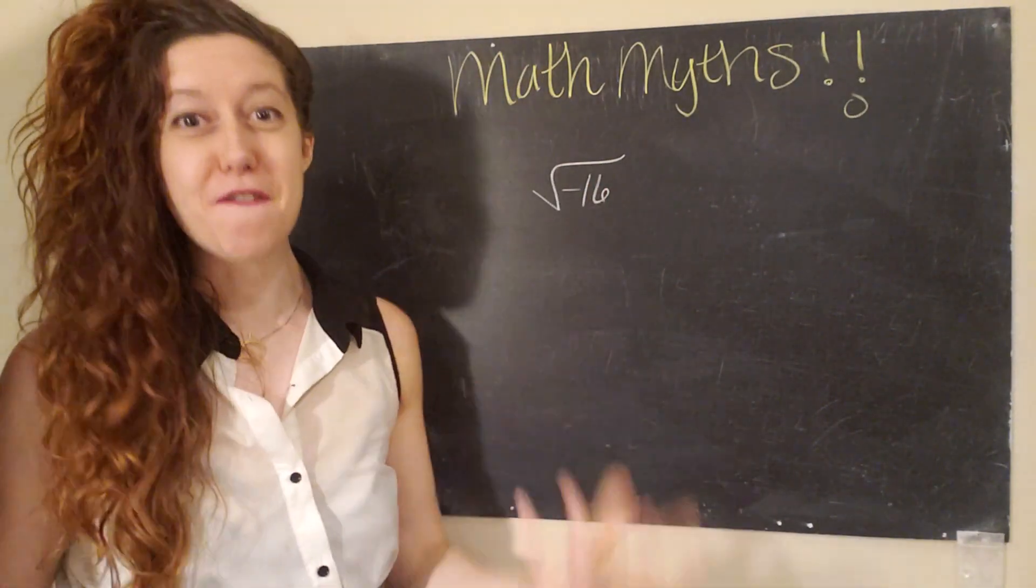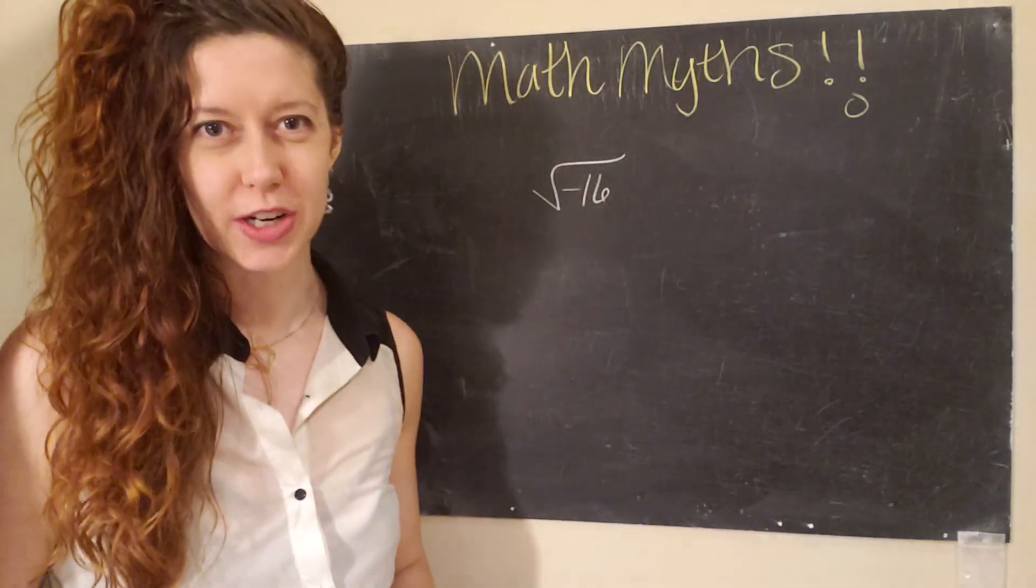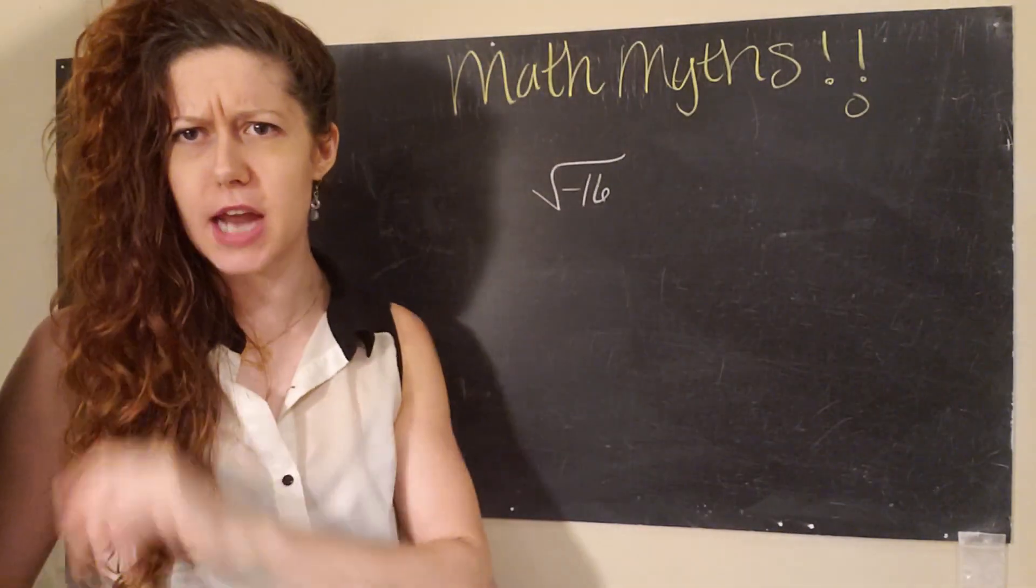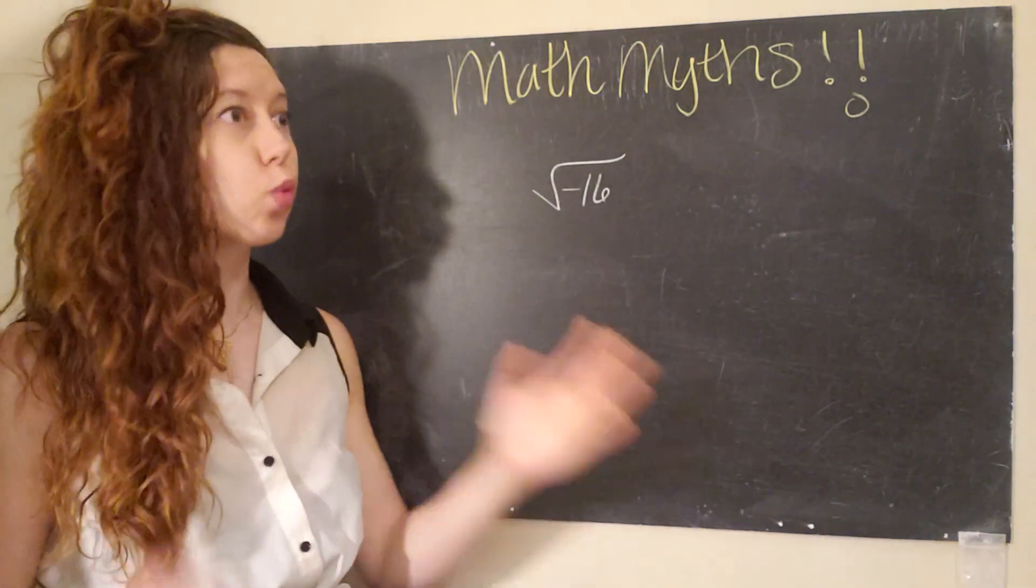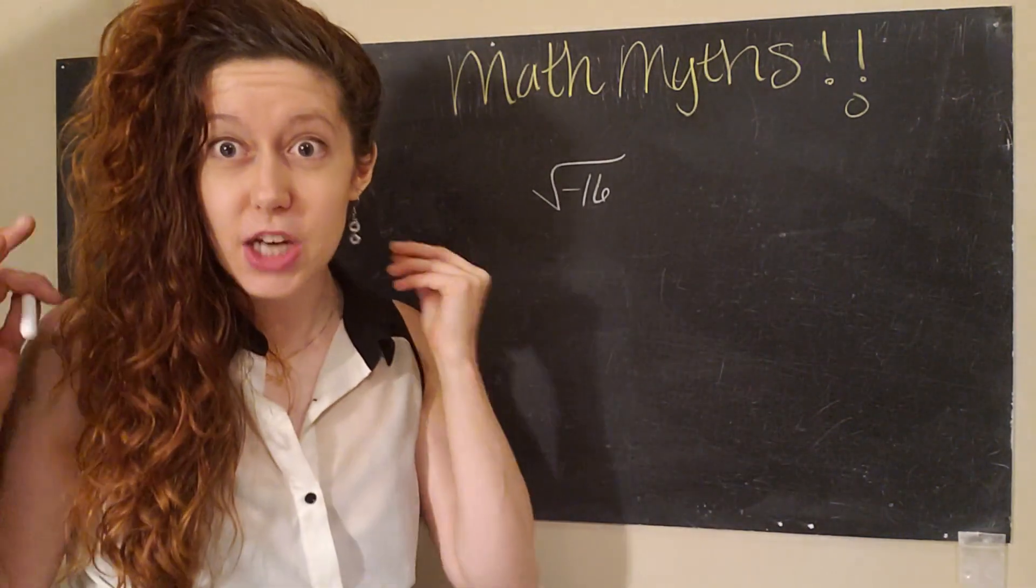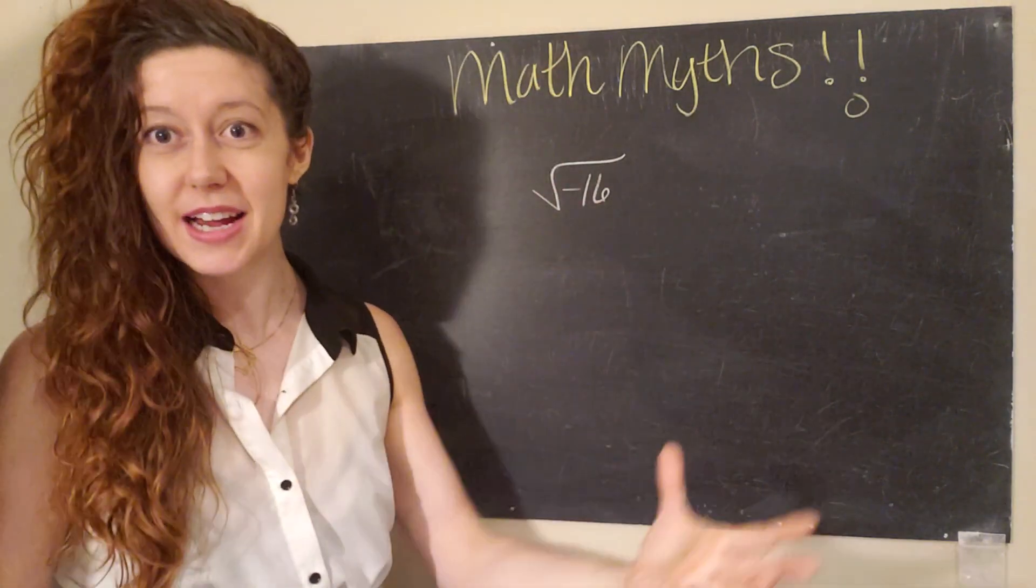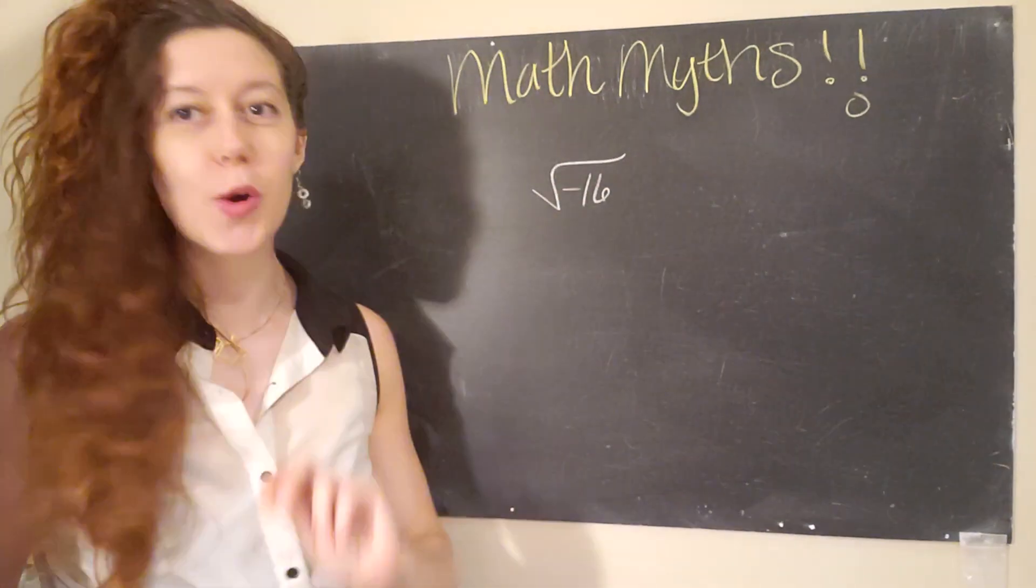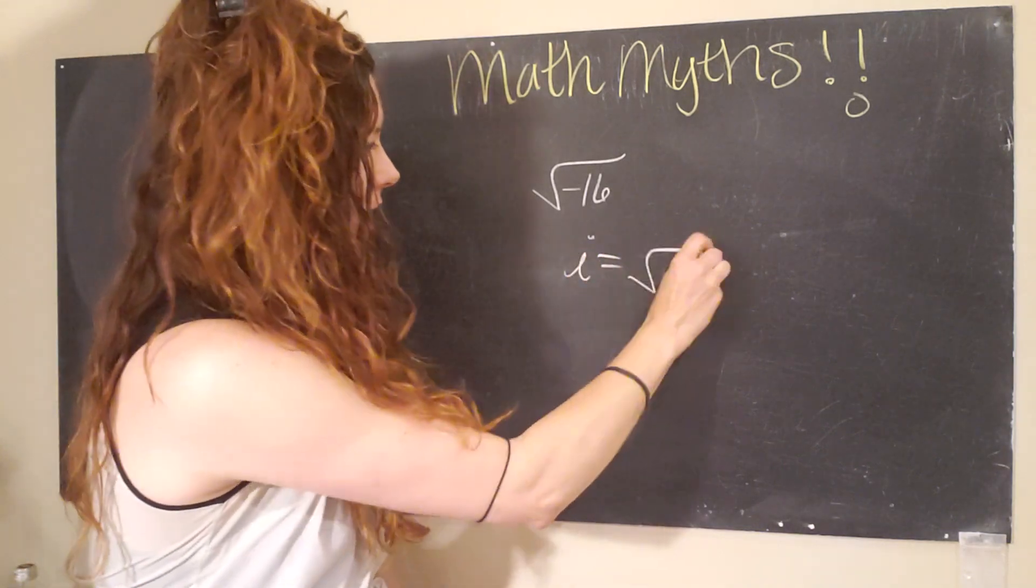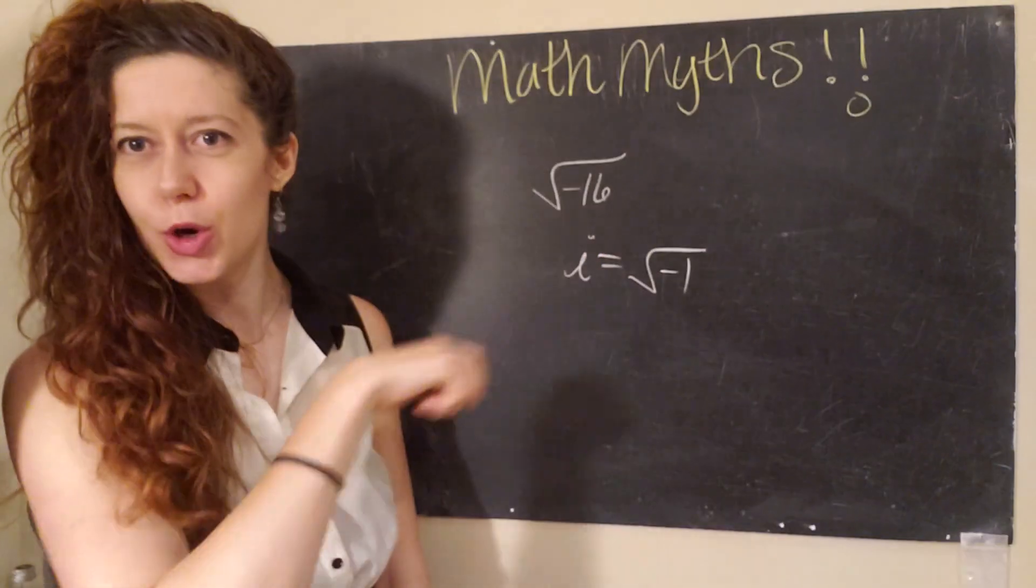Mathematicians as far back as the 1700s were grappling with this problem. They kept running into these pesky negative square roots and realized, wait a second, our number system is incomplete. We are missing a number. And so they defined i to be the square root of negative one.